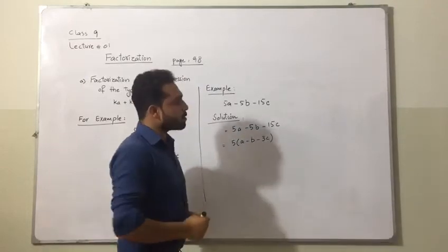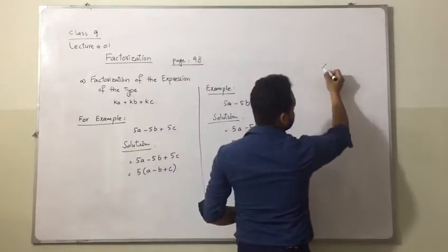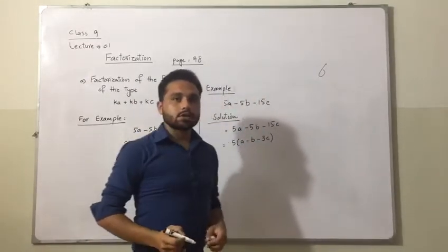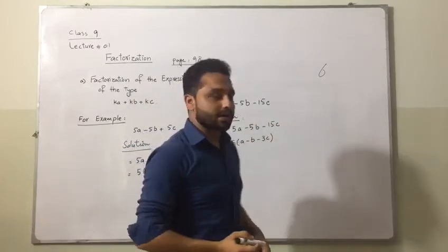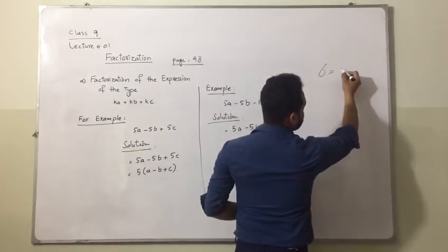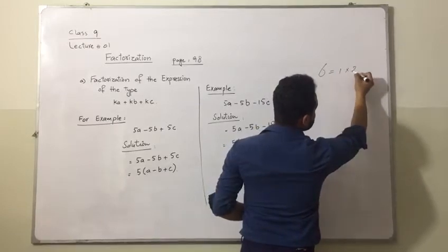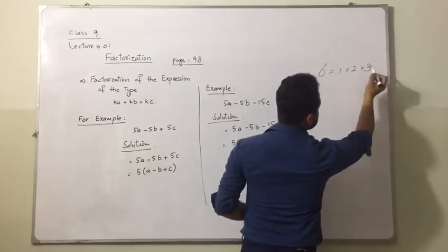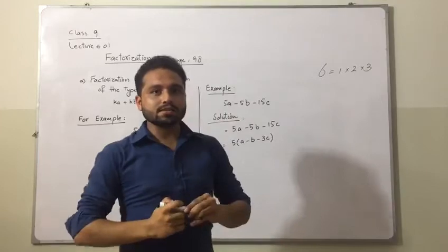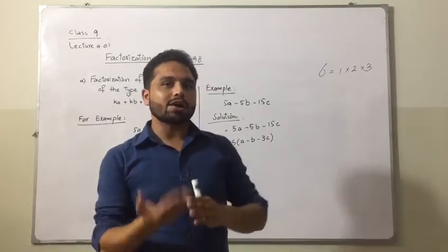For example, if we talk about the number 6. We have 6. We want to find its factors. So we know that the factors of 6 are 1, 2 and 3. So these are the factors of 6. So this is called factorization.